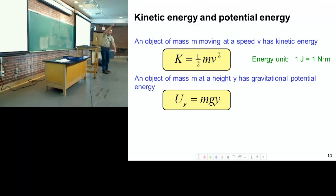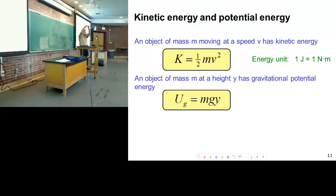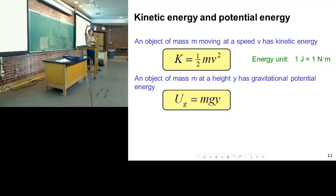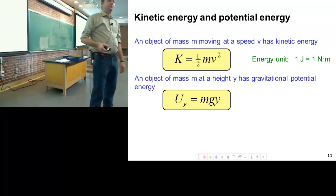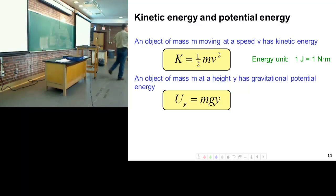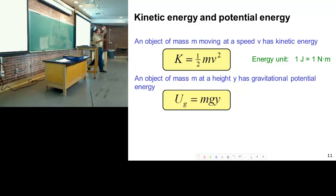So potential energy depends on position, and the object itself hasn't really changed. Kinetic energy is in the object — if it goes faster it has more kinetic energy. But potential energy? It's not stored in the object; it's stored in the relationship between the object and its environment. That's where the potential energy is — it's a little harder to grasp because it's not as tangible.